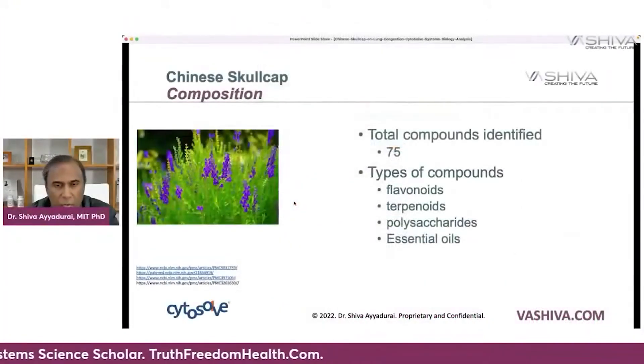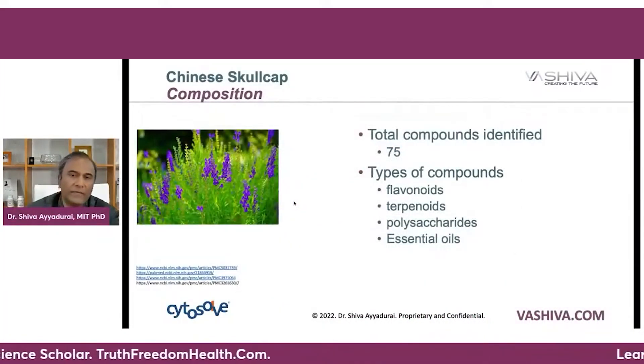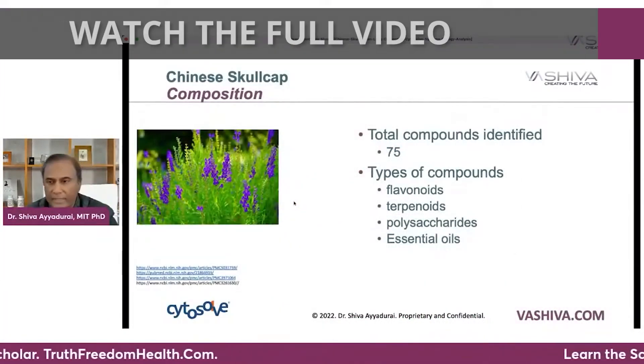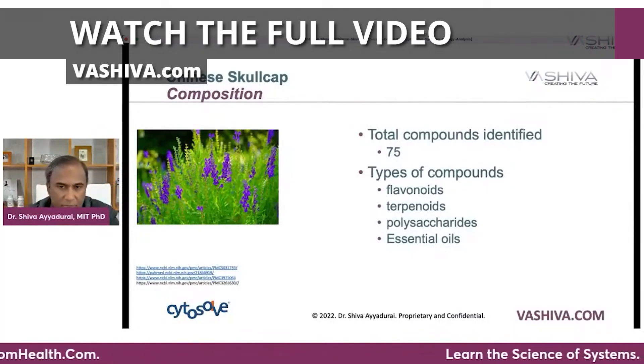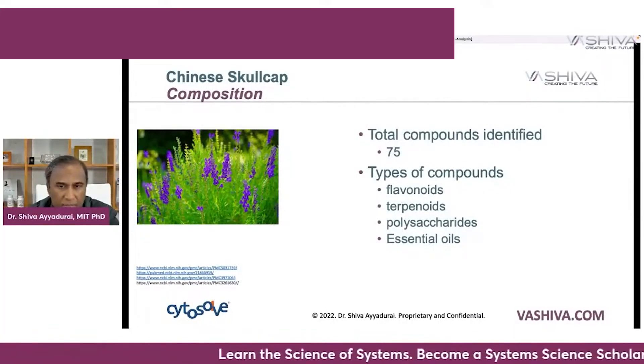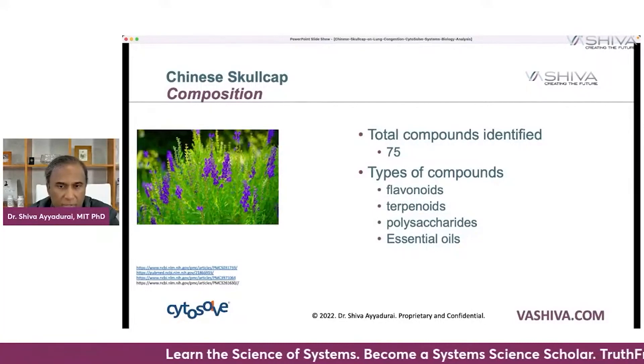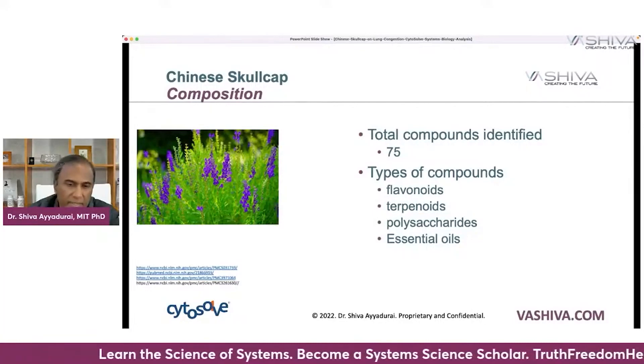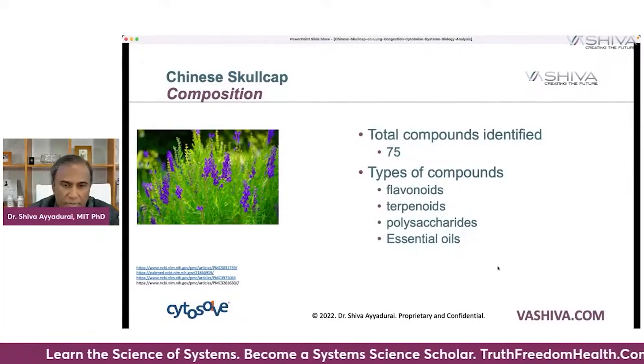There are a total of 75 different chemical compounds identified so far in Chinese Skullcap, and they fall into four different types: flavonoids, terpenoids, polysaccharides, and essential oils.